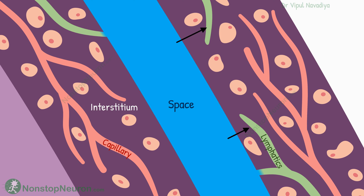The lymphatic drainage also occurs similarly by nearby lymphatics. In some cavities, the lymphatic channels arise directly from the space as well — for example, in the pleural and peritoneal cavities — so a large quantity of lymphatic drainage occurs through them.